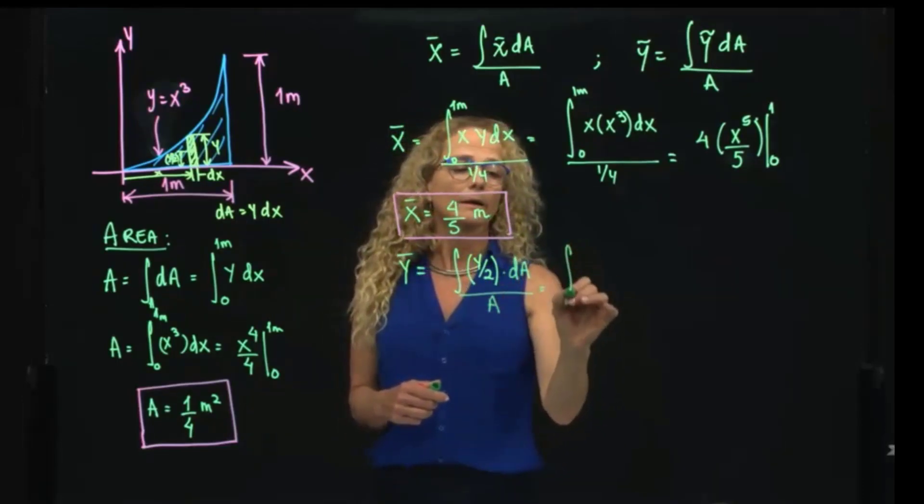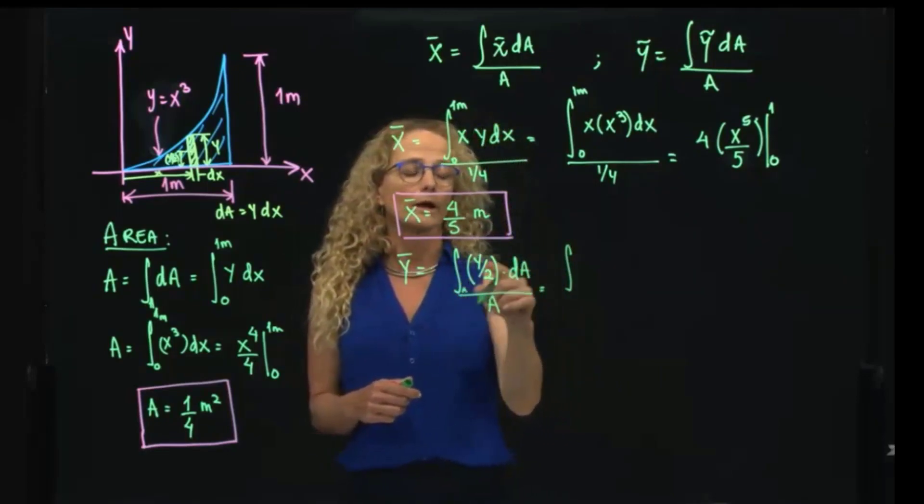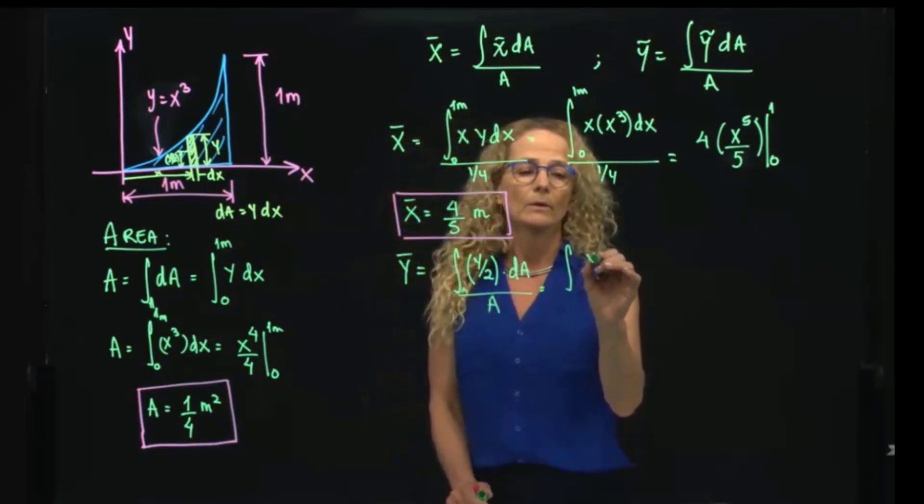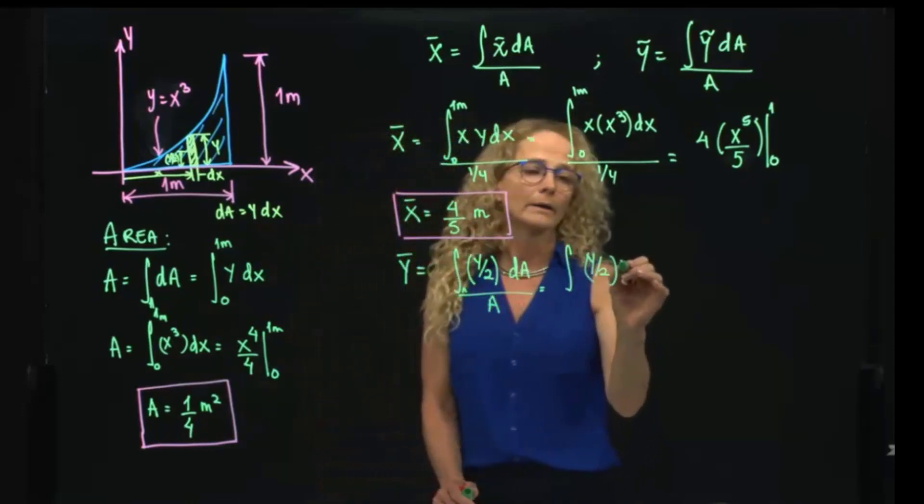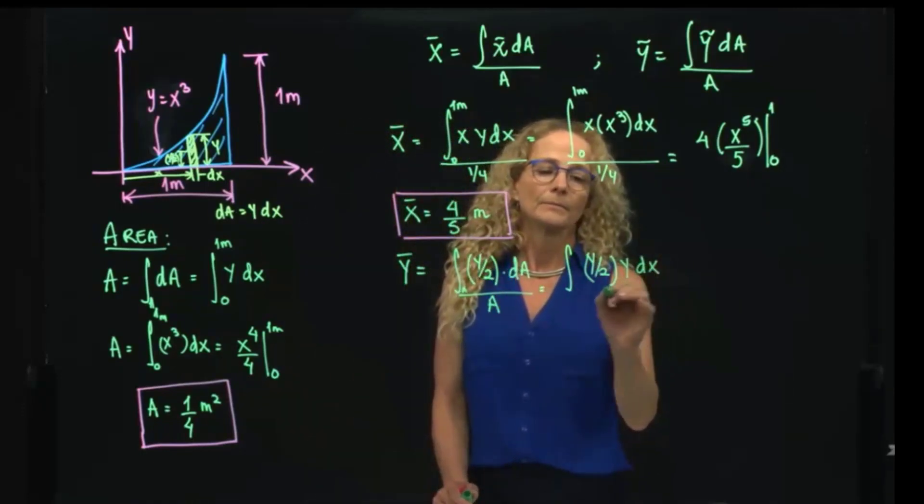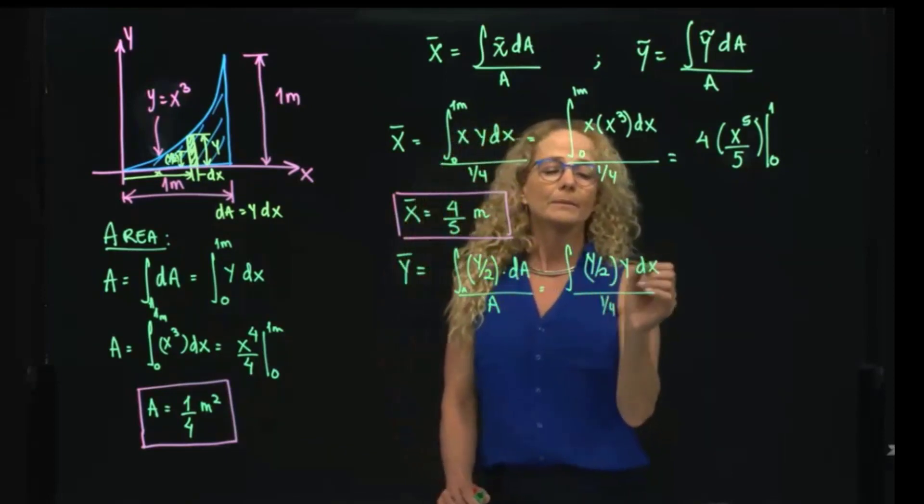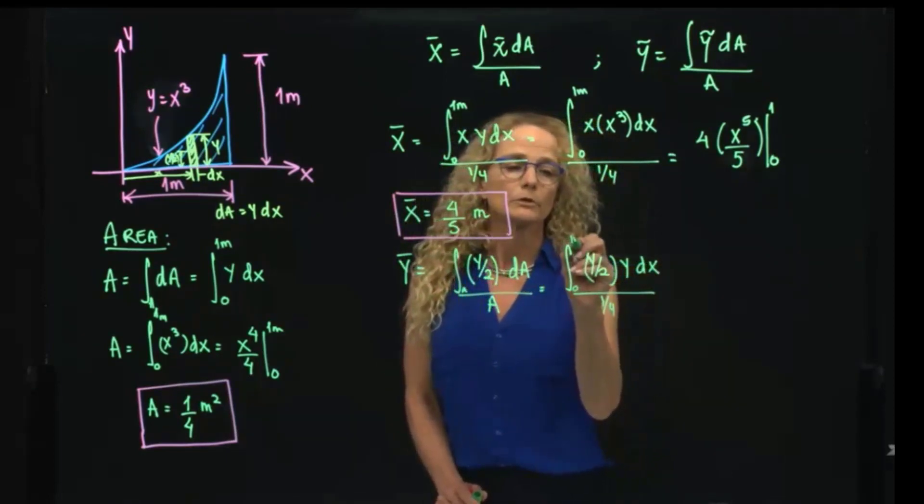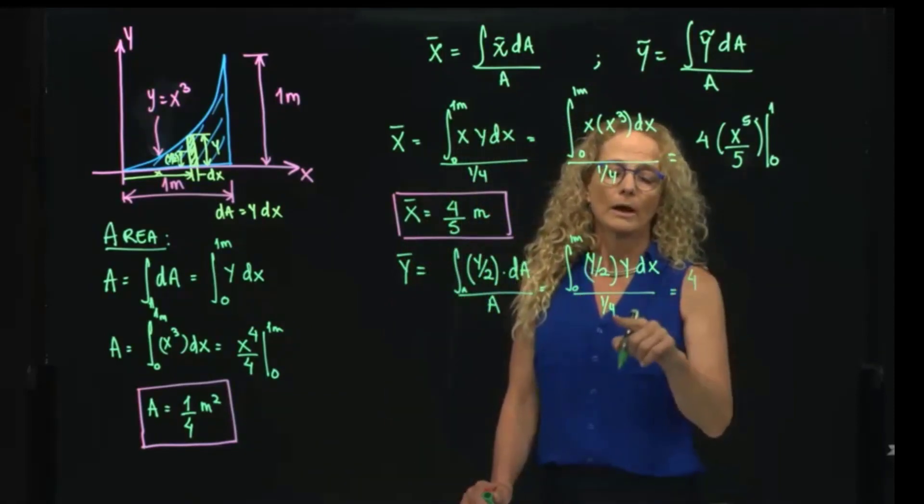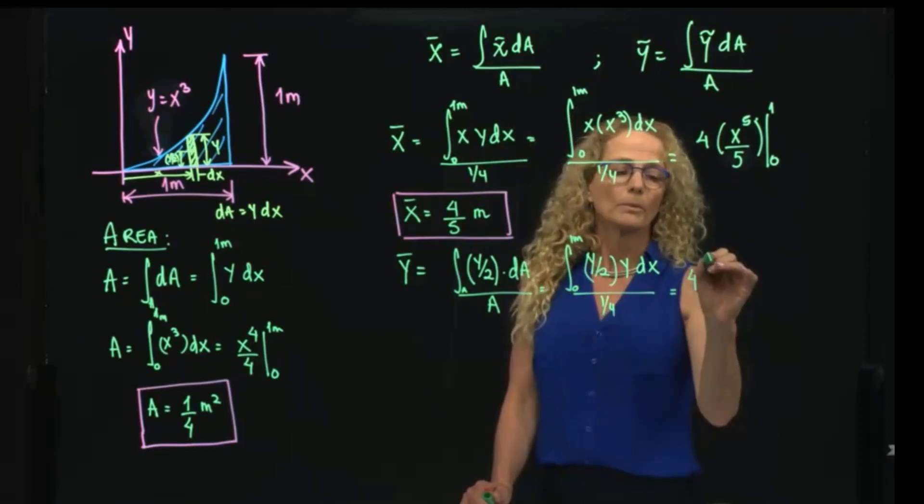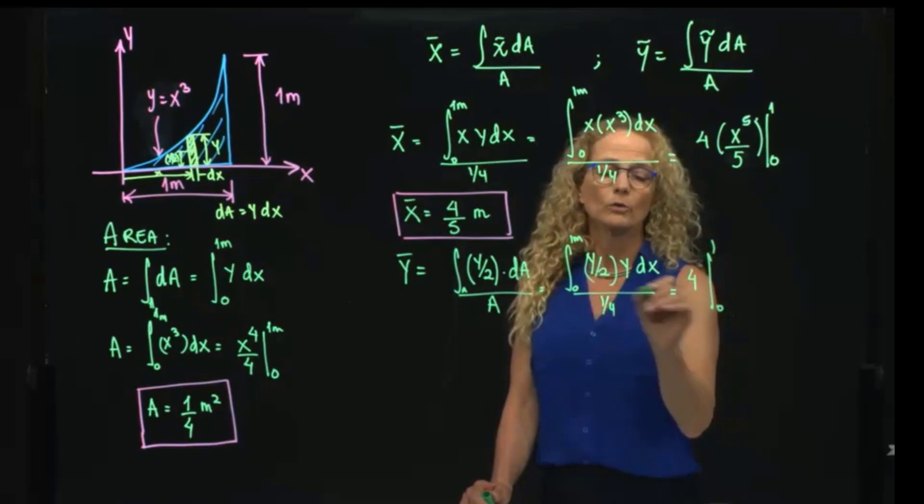And then I can convert that double integral to y over 2. My differential of area is y dx over the total area, which is 1 fourth. And my limit of integration will be from 0 to 1 meters. And that equals 4. I will pass that to the top, 0 to 1. And that gives me over 2.